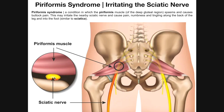This can also be a problem in about 12.5% of people where the sciatic nerve, instead of running underneath the piriformis, actually goes through the muscle itself — through a hiatus in the piriformis. In that case, if the muscle is spasming or tight, it will also compress the sciatic nerve. Either way, you'll have pain radiating from the buttocks all the way down to the leg potentially, and that is piriformis syndrome.